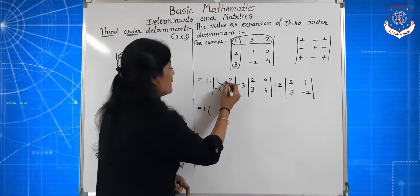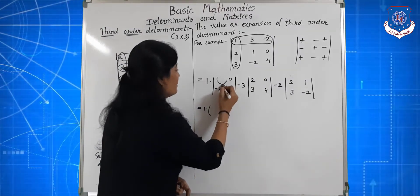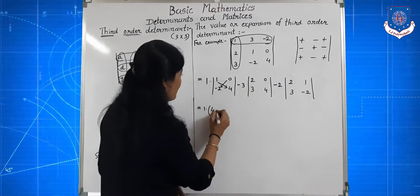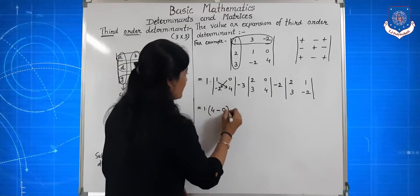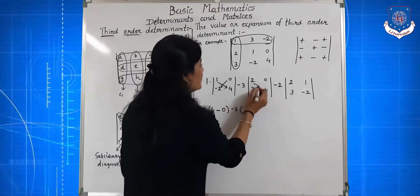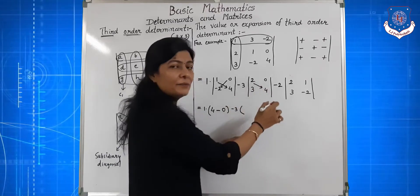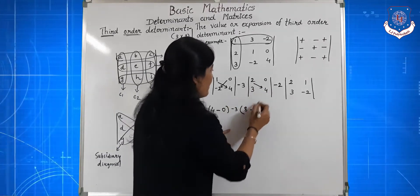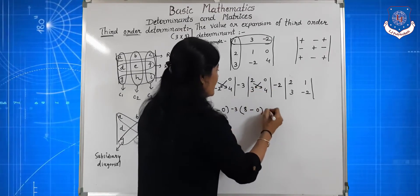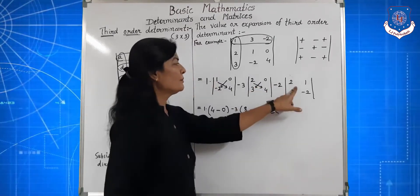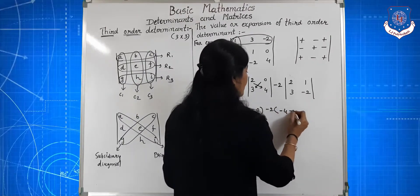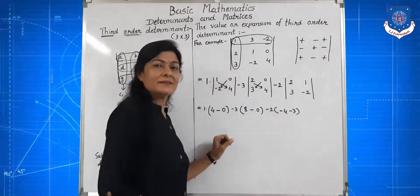Now third element is minus 2 and sign is plus, so keep as is — minus 2 into the determinant after deleting first row and third column, giving elements 2, 1, 3, minus 2. Equal to 1 into: value of second order determinant by cross multiplication — multiplication of diagonal elements minus multiplication of the other diagonal — so 1 into (4 minus 0), minus 3 into (8 minus 0), minus 2 into (minus 4 minus 3).